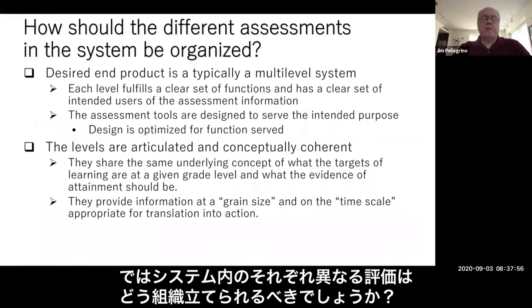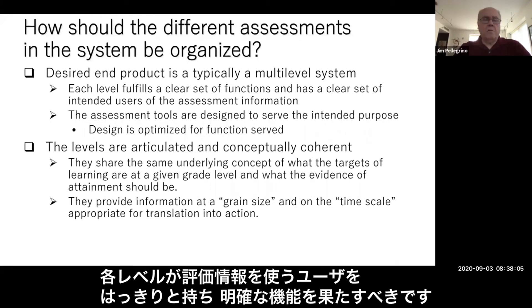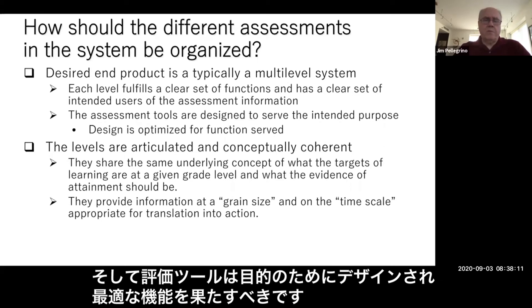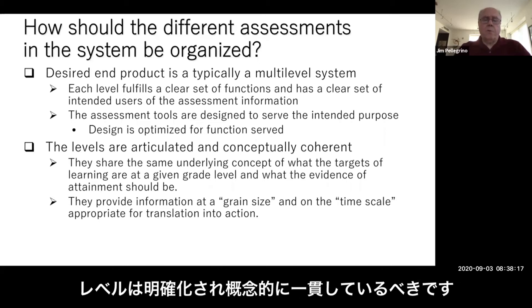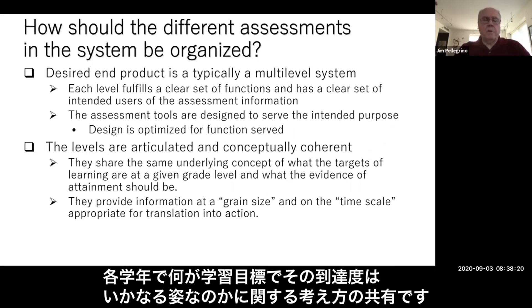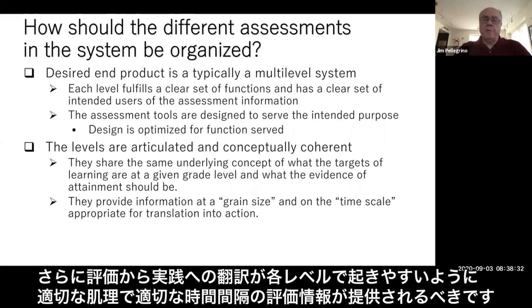How should the different assessments in the system be organized? Typically, we want a multi-level system where each level fulfills a clear set of functions and has a clear set of intended users of the assessment information. The assessment tools are designed to serve the intended purposes, and design is optimized for the function served. The levels should be articulated and conceptually coherent — they share the same underlying concept of what the targets of learning are at a given grade level and what the evidence of attainment should be, but provide information at the grain size and on the time scale appropriate for translation into action at each respective level.